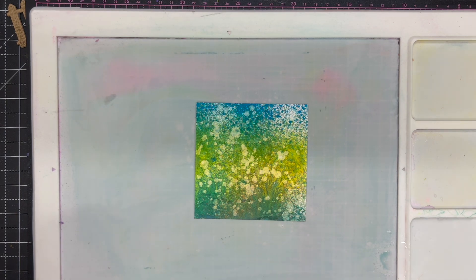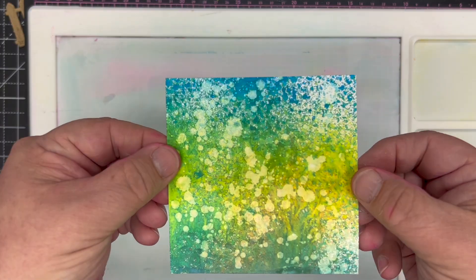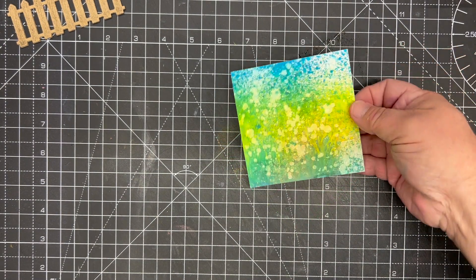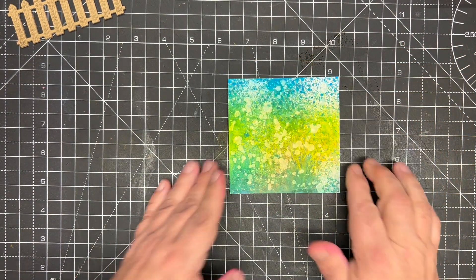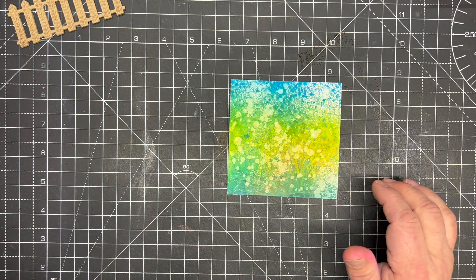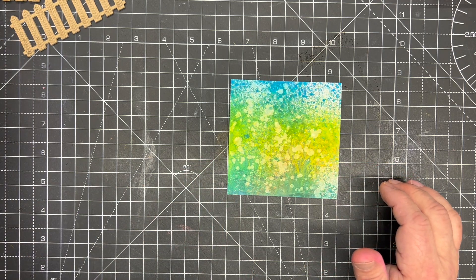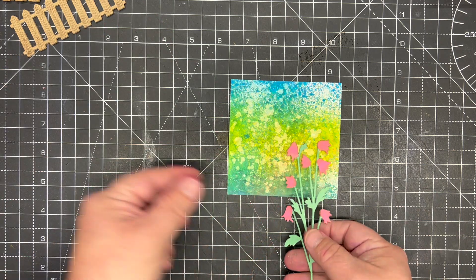It gives such a wonderful textured background and really works beautifully. So we'll move our board out of the way. We've got our background, so all I've done now is to cut and make up some of the garden flowers.